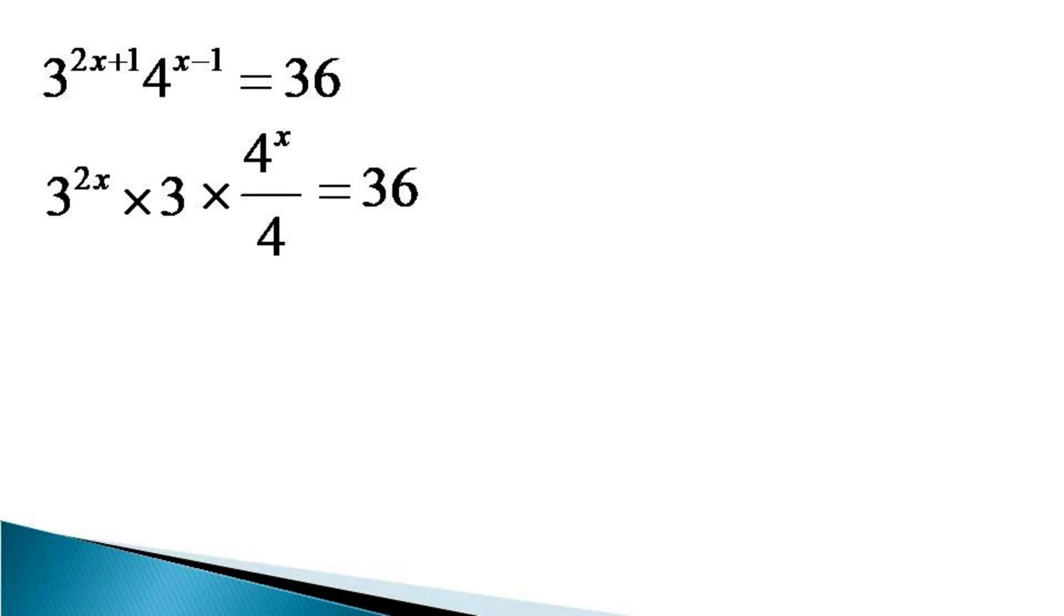This whole equation is multiplied by 4 by 3 to isolate the exponential terms on the left hand side and the equation becomes 3 raise to the power 2x into 4 raise to the power x is equal to 36 into 4 by 3.